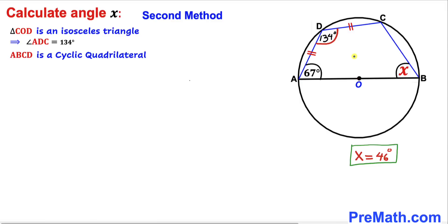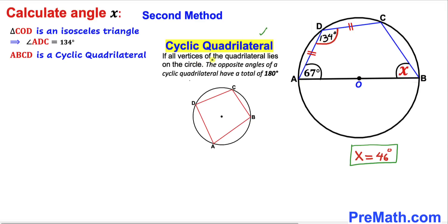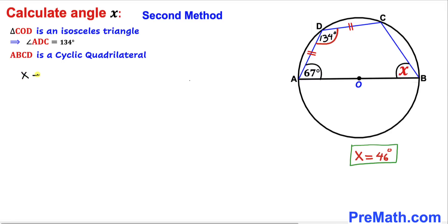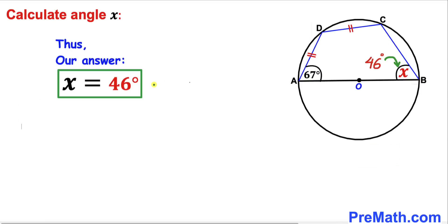Now focus on quadrilateral ABCD — it's a cyclic quadrilateral, meaning all vertices lie on the circle. In a cyclic quadrilateral, opposite angles add up to 180 degrees. Therefore angle X plus angle ADC equals 180 degrees: X + 134 = 180. Subtracting 134 from both sides, angle X turns out to be 46 degrees.